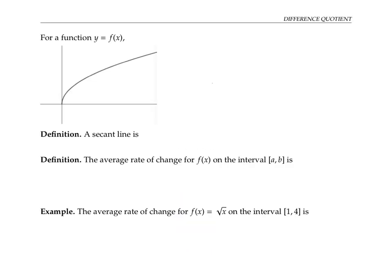For a function y equals f of x, like the function graphed right here, a secant line is a line that stretches between two points on the graph of the function. I'm going to label this x value as a and this x value as b. So this point here on the graph is going to have an x value of a and a y value given by f of a.